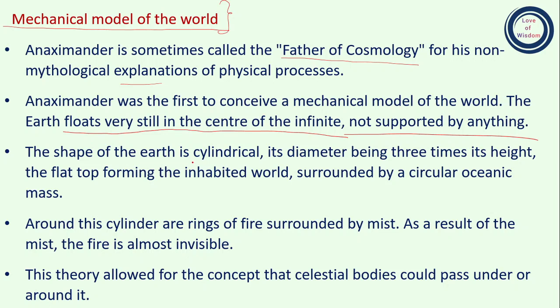According to Thales, the shape of the earth is spherical, but according to Anaximander, the earth is cylindrical — its diameter being three times its height, with the flat top forming the inhabited world, surrounded by a circular oceanic mass. Around the cylinder are rings of fire surrounded by mist. You can picture this model in your mind, or search online to find an image of it. The fire forms a ring around the earth.